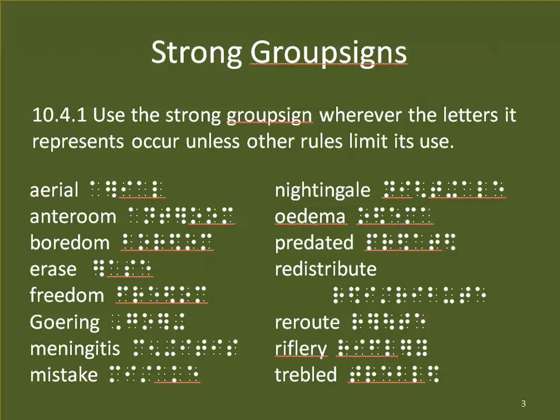Nightingale, edema — that's a diphthong, we can still use the ED there. Predated — notice that it's a prefix bridging a prefix and a root word. We're not going by pronunciation of these contractions; we're going by the letters. So it's going to take a little mental adjustment, but once you get it, these start making more sense. More examples: redistribute, reroute, riflery, and trebled. Notice we don't have BLE anymore — that frees up the ED, so we can use the ED contraction in that word.